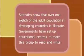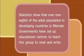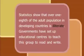Here's a quick test to try out your skills. Can you guess the meaning of the highlighted words from the context? Statistics show that over one-eighth of the adult population in developing countries is illiterate. Governments have set up educational centres to teach this group to read and write. What does illiterate mean? We know that it's an educational matter related to teaching people to read and write, and that it's a large problem in developing countries. Illiterate would mean not able to read or write.